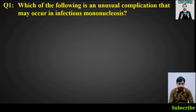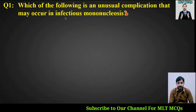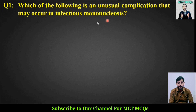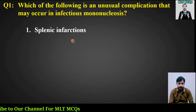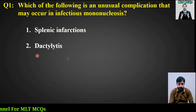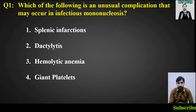MCQ number 1: Which of the following is an unusual complication that may occur in infectious mononucleosis? Options are: splenic infarctions, dactylitis, hemolytic anemia, or giant platelets. The right answer is option number 3, hemolytic anemia.